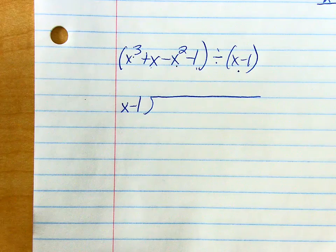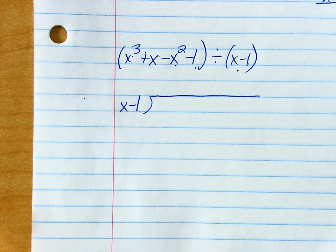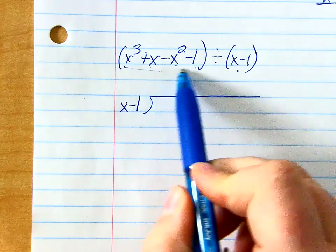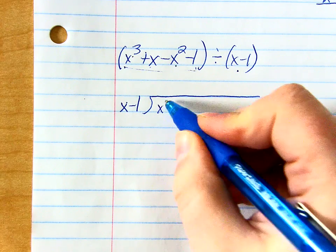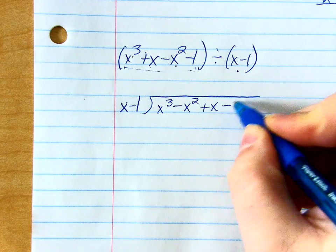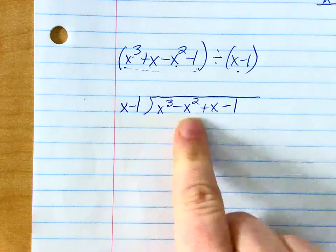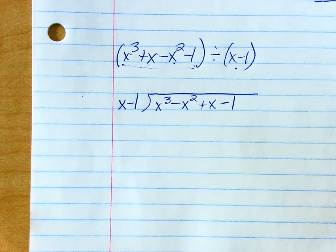What I should do though is put it in here in standard form. That's going to help me keep everything lined up. So I don't want to write it like I see it. What do I want to write? x to the third minus x squared plus x minus 1. I want it to be in descending order for my exponent. So x to the third, x squared, x, and then no x at all.